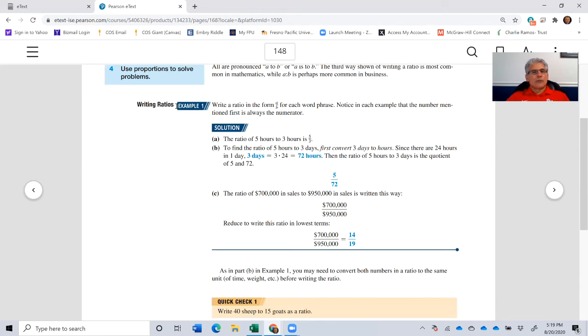For example, when a ratio is in the form A to B for each word phrase, notice in each example that the number mentioned first is always the numerator. So the ratio of five to three hours is five over three. In this example, we're saying that the ratio is five hours to three hours, so five to three.